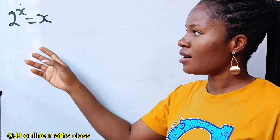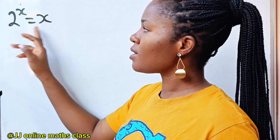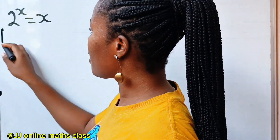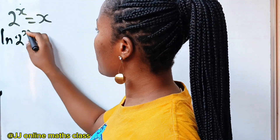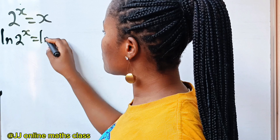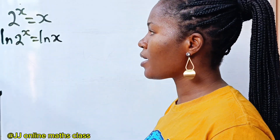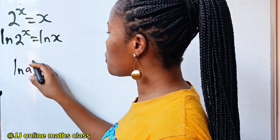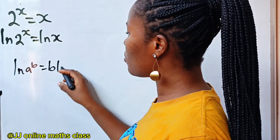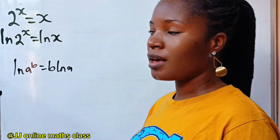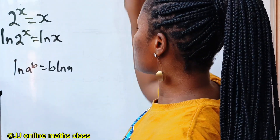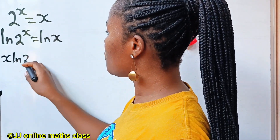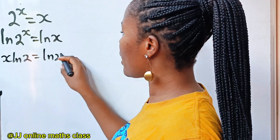Let's solve for the value of x. Let's introduce ln, a natural log, to both sides of this equation. So we have ln of 2 to the power of x is equal to ln(x). When you have something like ln(A) to the power of b, that equals b multiplied by ln(A). So we can bring this down to get x·ln2 is equal to ln(x).